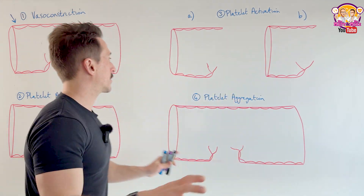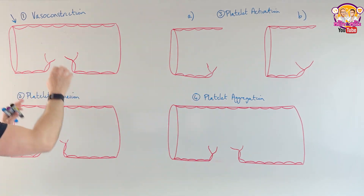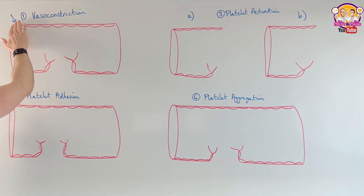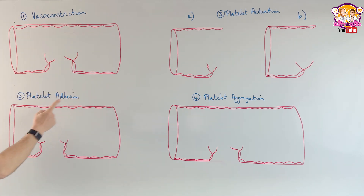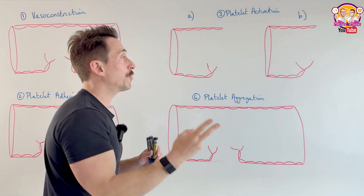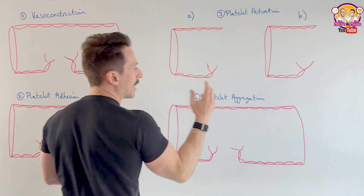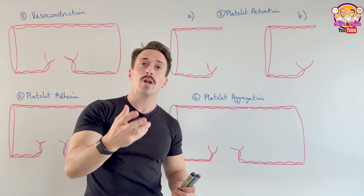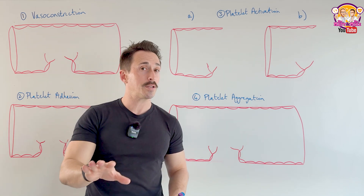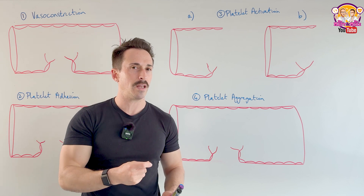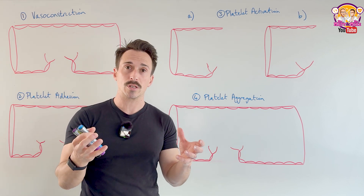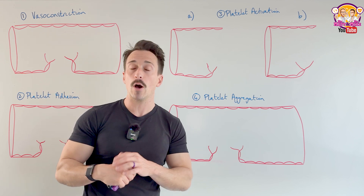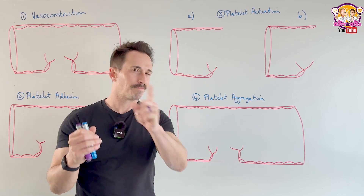Let's orientate ourselves. We have a number of damaged blood vessels here. In primary hemostasis there are a couple of different stages. The very first stage is called vasoconstriction. The second stage is platelet adhesion. The third stage, which we'll look at in two parts, is platelet activation — part A and part B. And then the final stage is platelet aggregation. By the end of platelet aggregation we should have formed what we call a platelet plug — not a clot, but a plug. That's important, because we're also going to talk about disorders that result in platelet problems and bleeding issues, as well as drugs that can be used to prevent clotting.